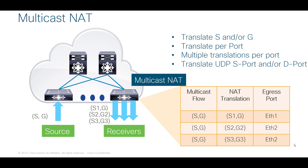As an example, I can take the same source and group and translate it as S1G1 on eth1, S2G2 on eth2, and S3G3 as well in another copy going on the same interface. So this is the flexibility you get with multicast NAT.